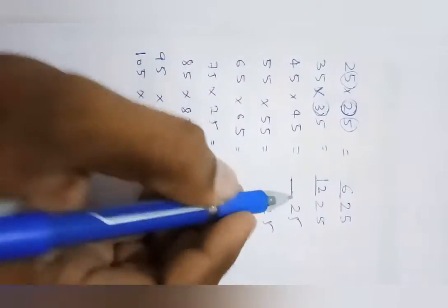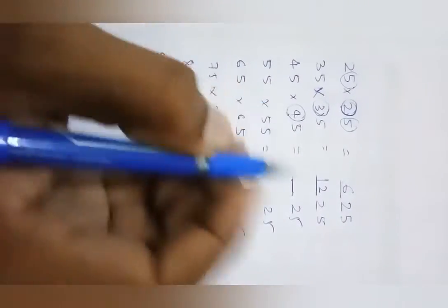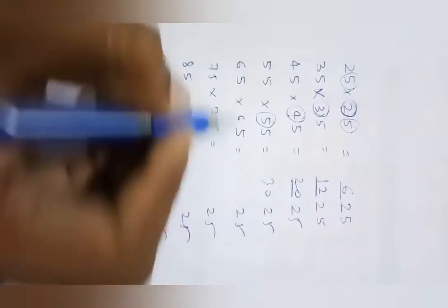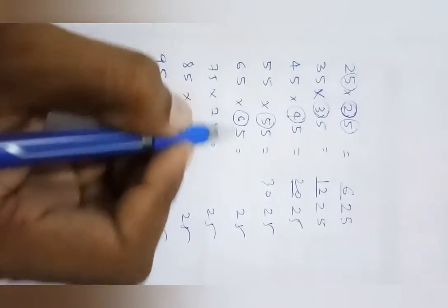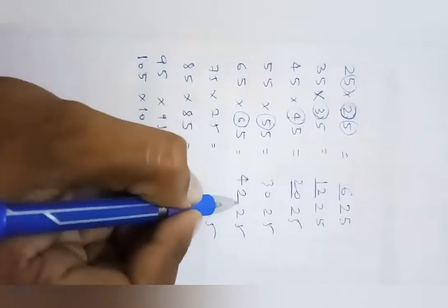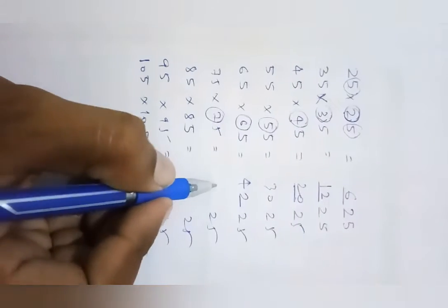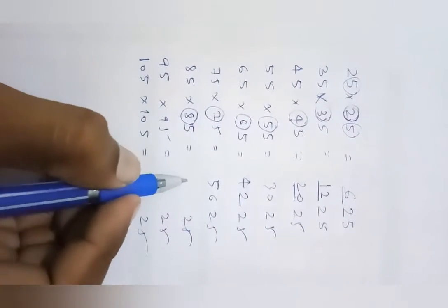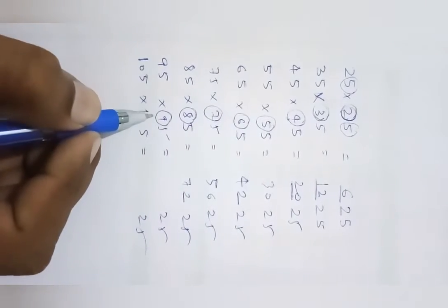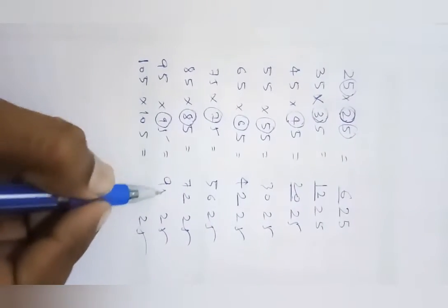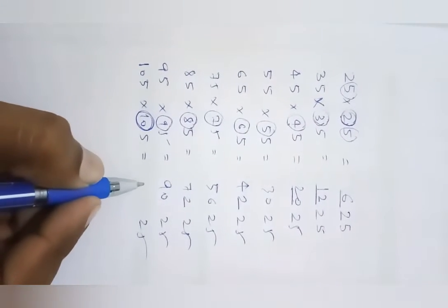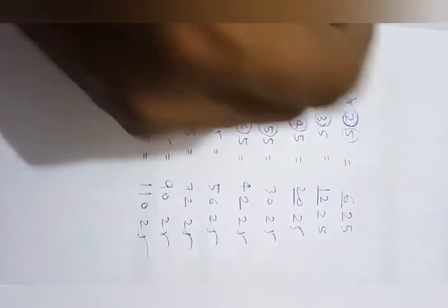Continuing the pattern: 4 times 5 is 20, so 45 into 45 is 2025. 5 times 6 is 30, so 55 into 55 is 3025. 6 times 7 is 42, so 65 into 65 is 4225. 7 times 8 is 56, so 75 into 75 is 5625. 8 times 9 is 72, so 85 into 85 is 7225. 9 times 10 is 90, so 95 into 95 is 9025. And 10 times 11 is 110, so 105 into 105 is 11025.